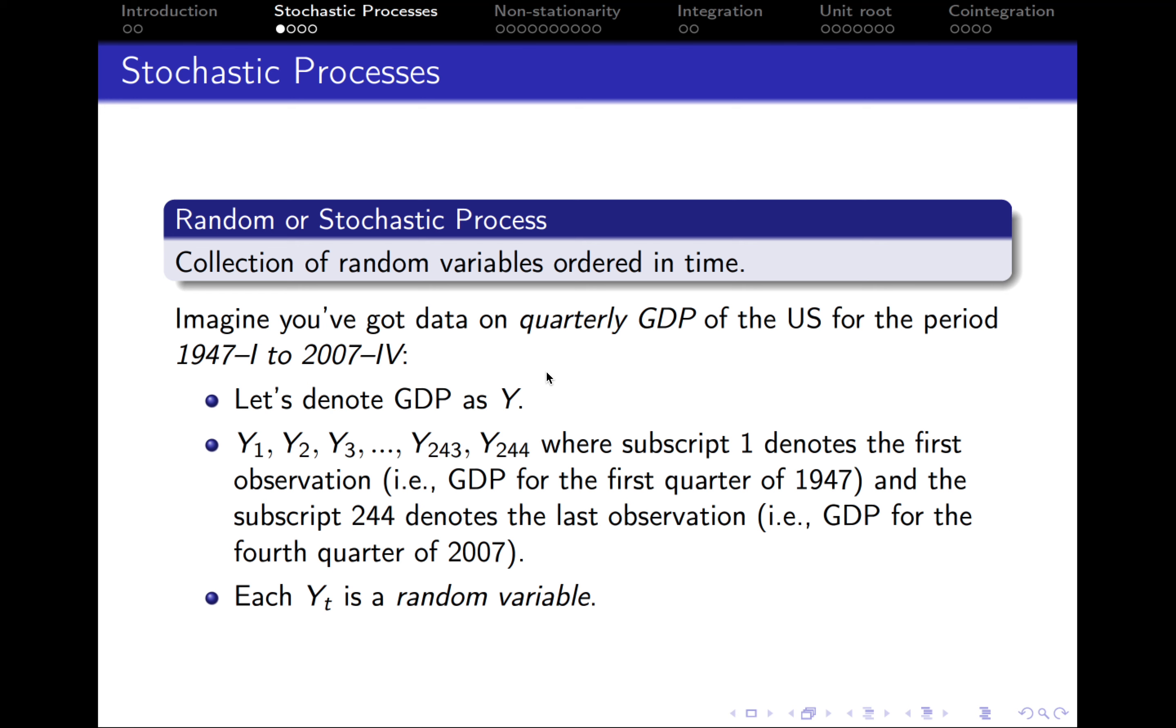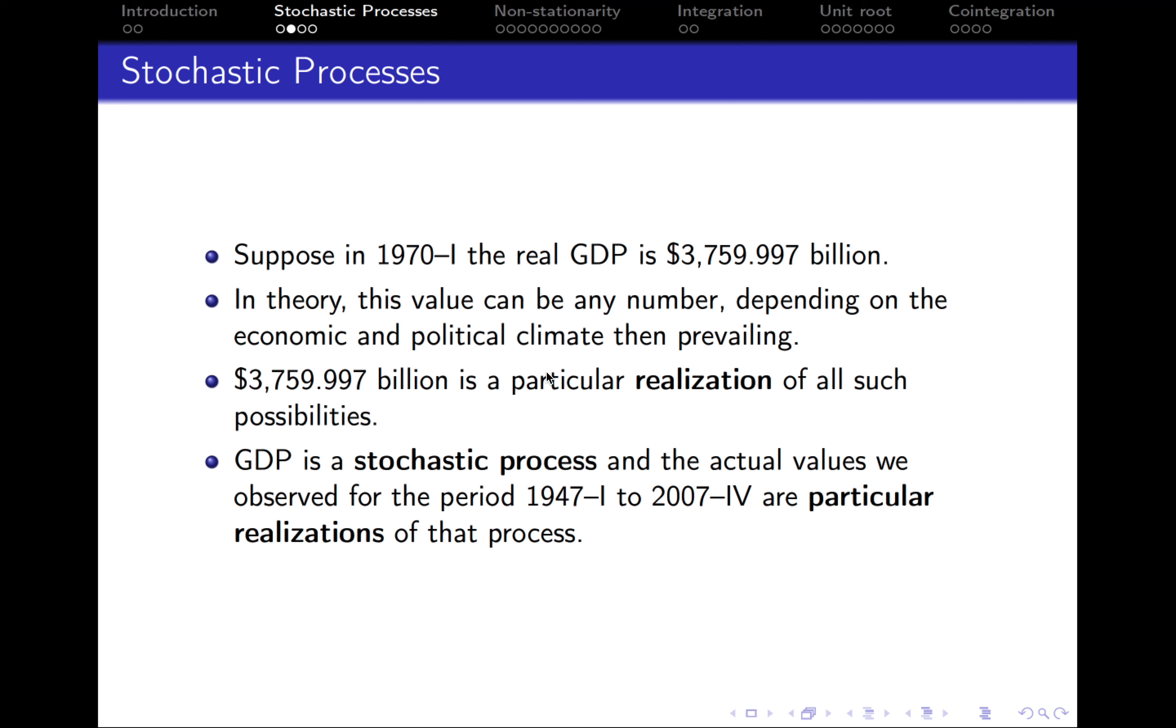In this case, each value of Y is a random variable. Therefore, together these variables are a random process. Now let's see why they are random.